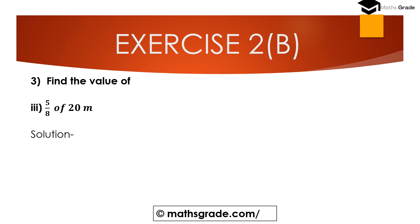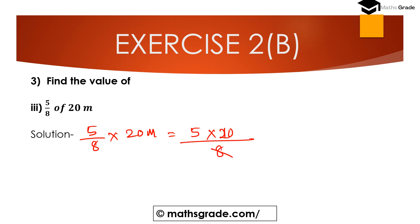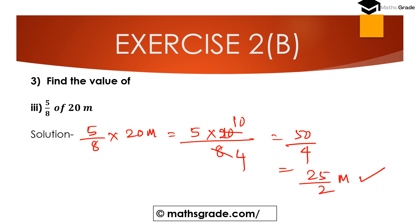Question number 3b: Find the value of 5 divided by 8 of 20 meters. So 5 multiplied with 20 divided by 8. We simplify: 4 goes into 8 twice, and 4 goes into 20 five times, giving 50 divided by 4, which is 25 divided by 2 meters. The answer is 25/2 meters.